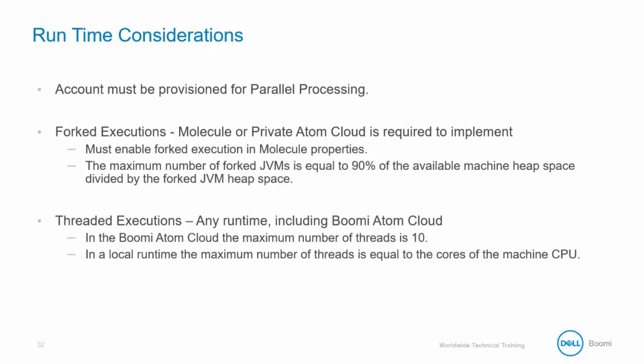So if a machine has eight gigabytes of RAM, four are allocated to the runtime. A forked execution will allocate additional RAM to the new JVM. However, you do not want to exceed 90% of the RAM of the machine in JVMs. You can have threaded executions in any runtime, including the Boomi Atom Cloud. In the Boomi Atom Cloud, the maximum number of threads is 10. In a local runtime, the maximum number of threads is equal to the cores of the machine's CPU.